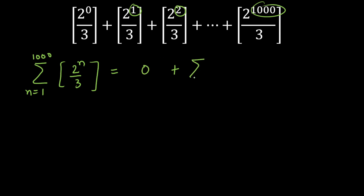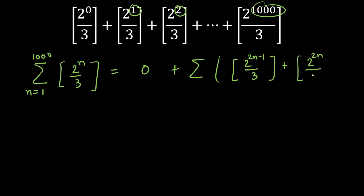So I can write this as summation: we will have GIF of 2 raised to power 2n minus 1 divided by 3 — this term represents the odd powers of 2 — plus GIF of 2 raised to power 2n divided by 3, which represents the even powers. And I am going to change n from 1 to 500, because for n equal to 500 you get 2 raised to power 1000, so we don't need to go till 1000.